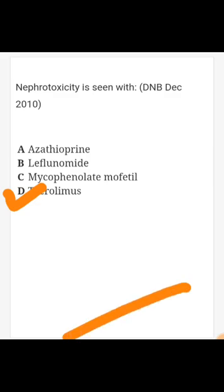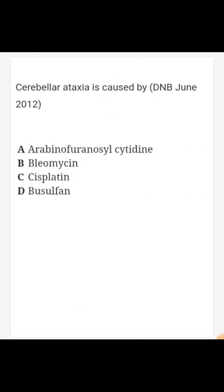Question number two: cerebellar ataxia is caused by which of the following? Options are arabinofuranosylcytidine (Ara-C), bleomycin, cisplatin, and busulfan. The answer is arabinofuranosylcytidine, used intrathecally for meningeal leukemia. It causes cerebellar toxicities including ataxia and slurred speech, as well as cerebral toxicities such as seizures and dementia.